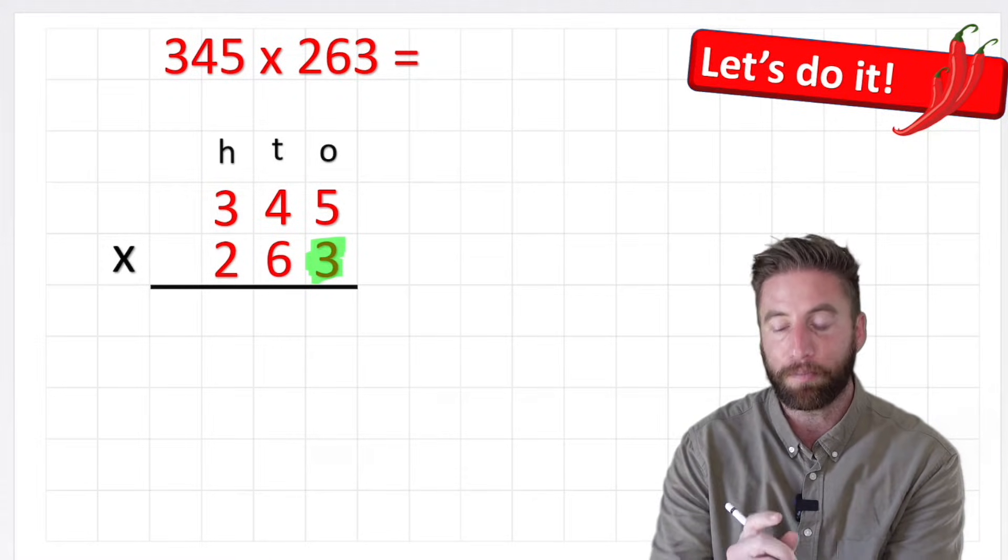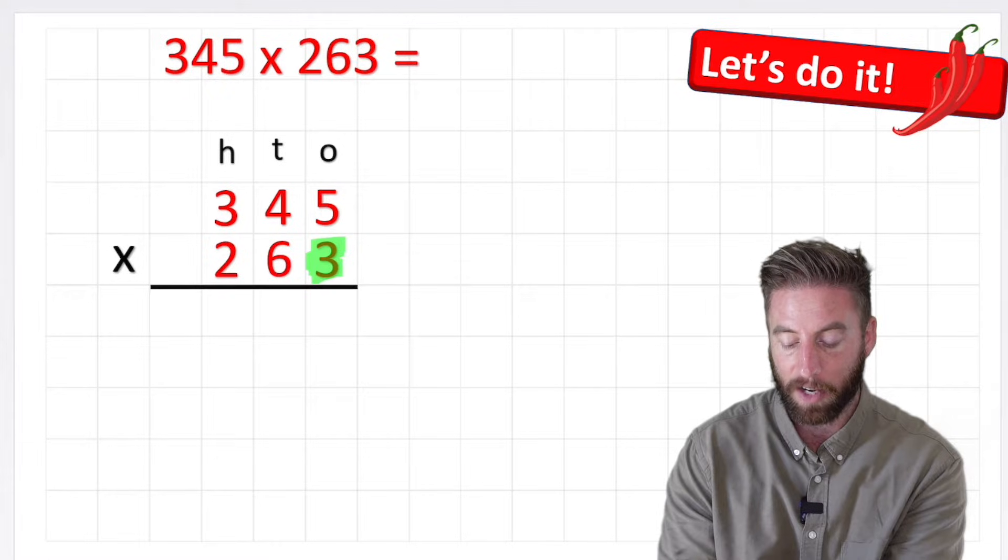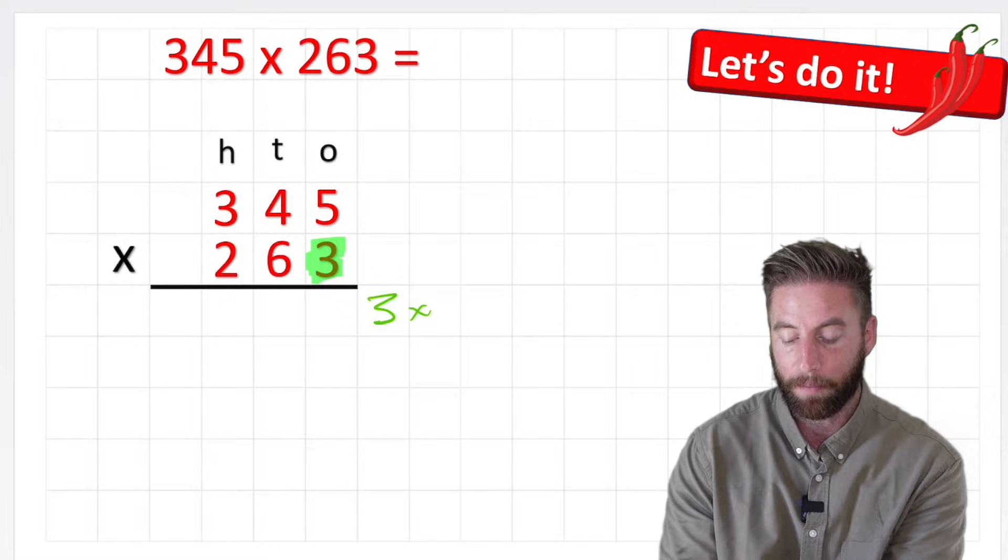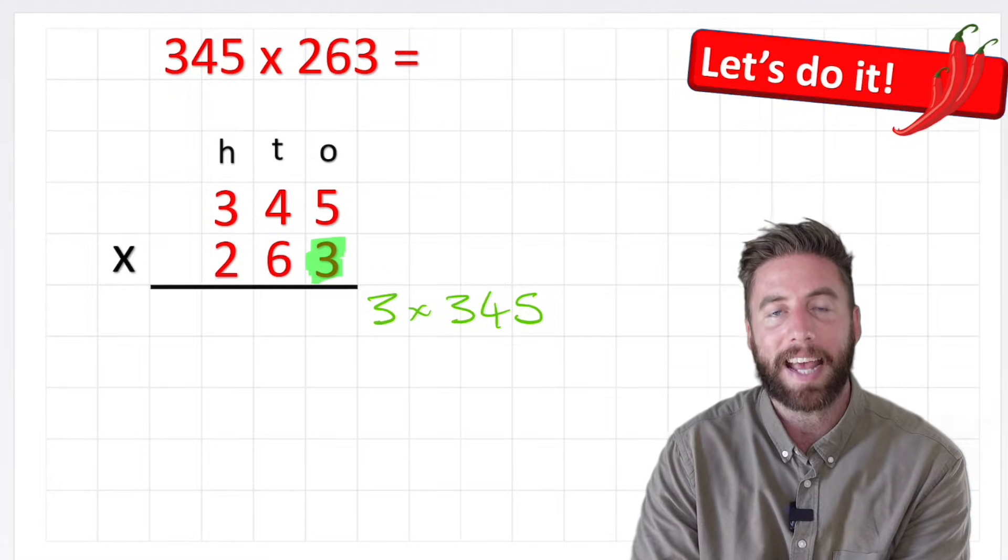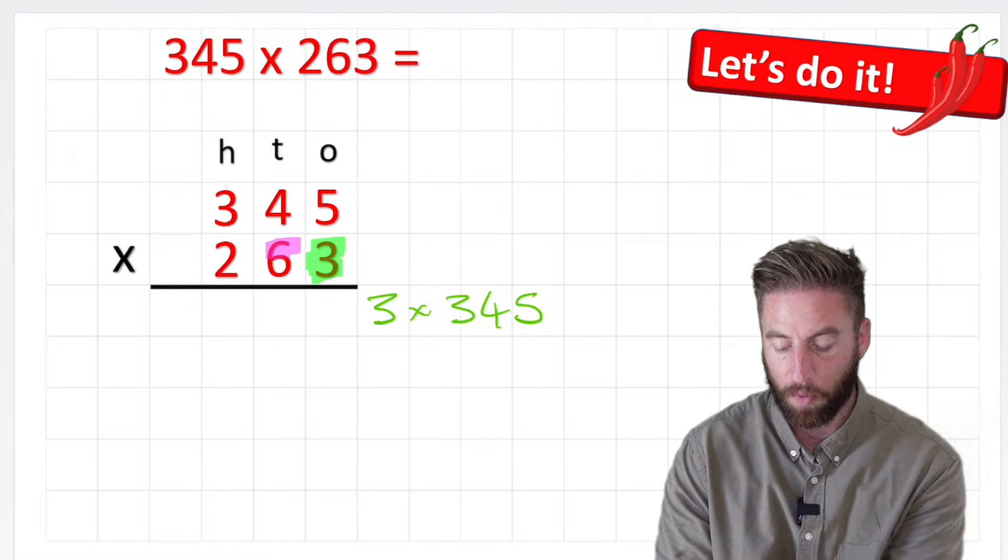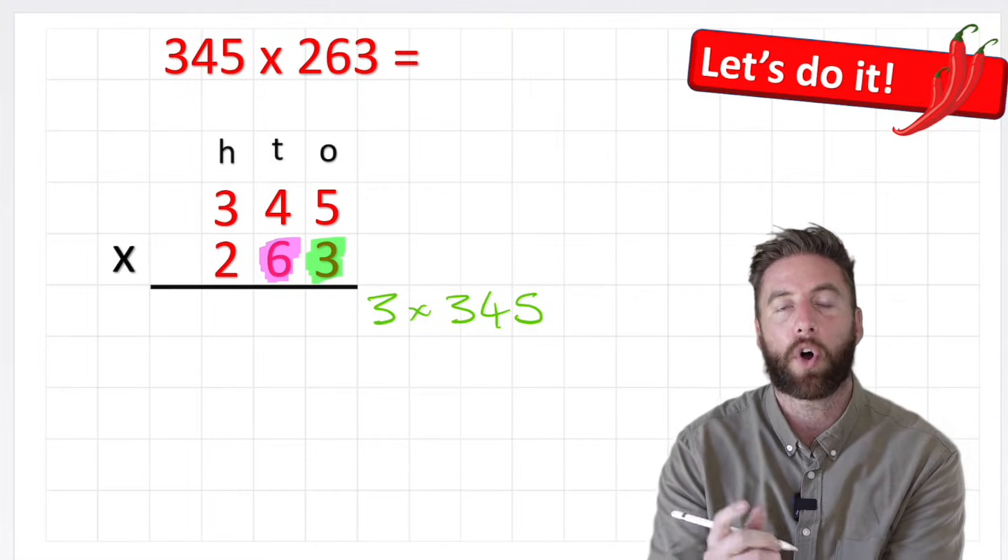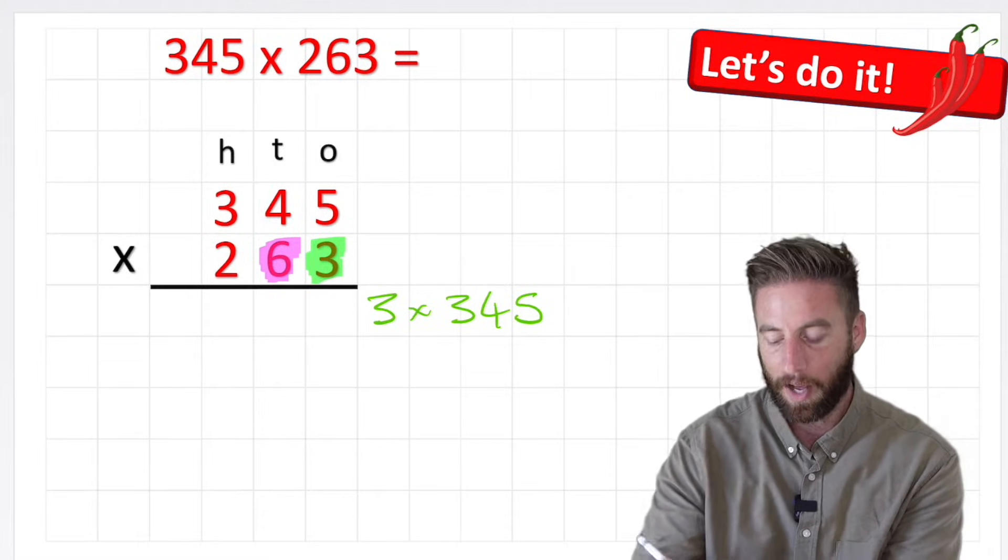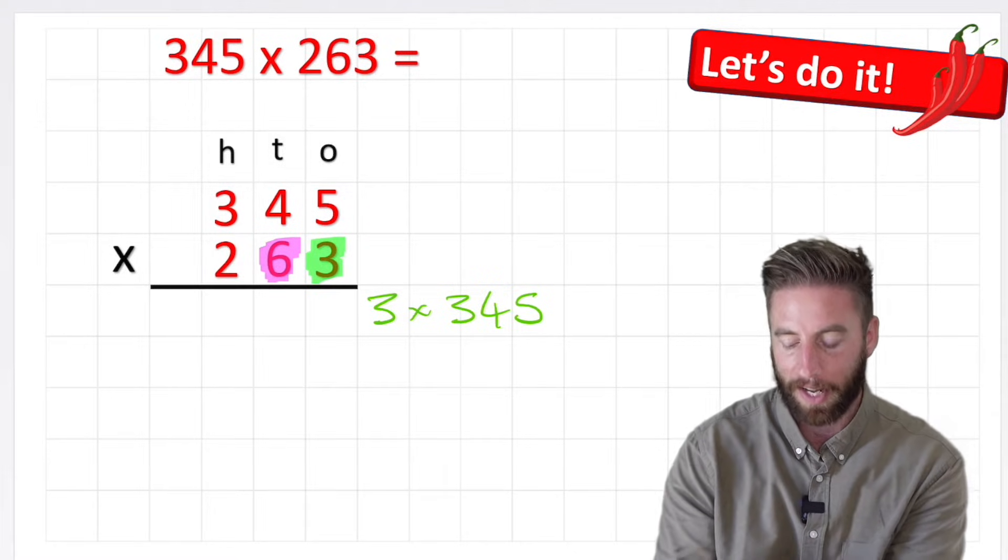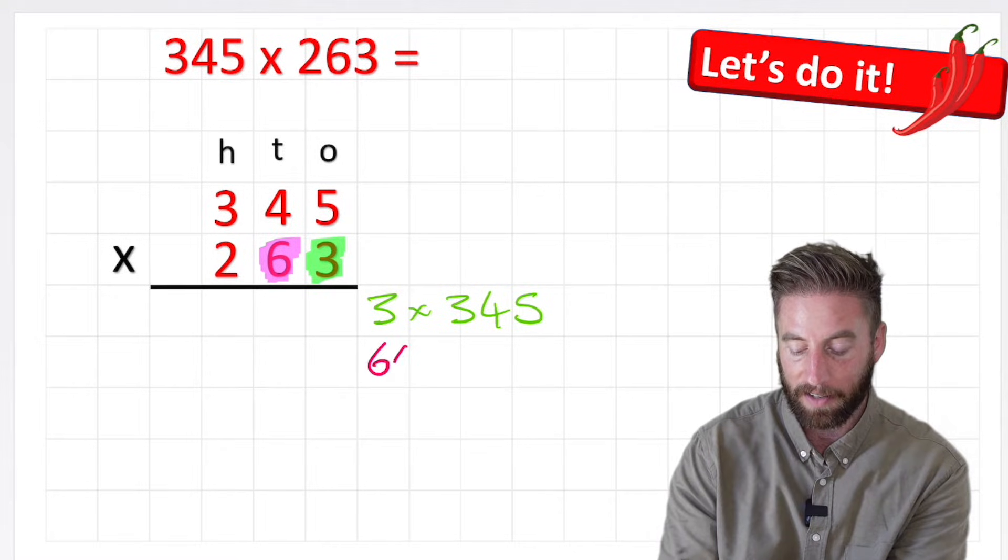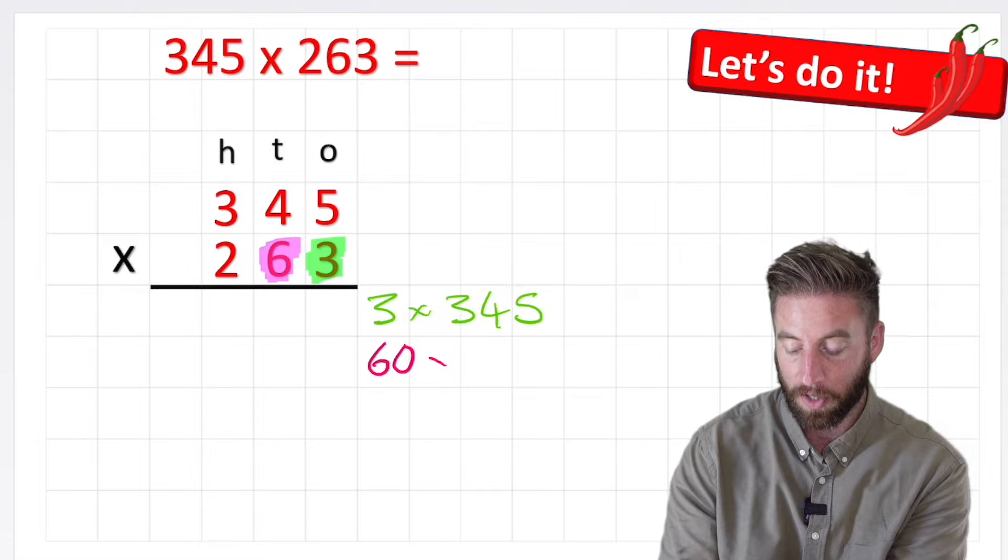Again, we're going to do that in stages, but essentially this line is going to be 3 multiplied by 345. Then we're going to look at our tens column, our next smallest value on the bottom row, which is then a 6, but it's not a 6, is it? It's actually in the tens column, so it holds the value of a 60, and we must remember that. It's going to be 60 multiplied by the top row, which is 345.